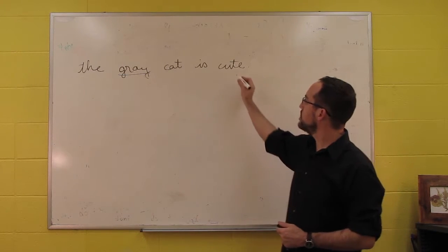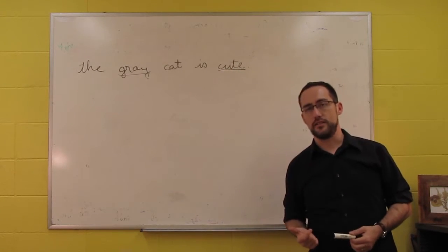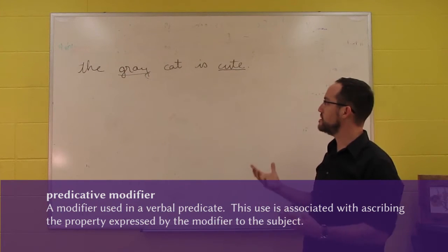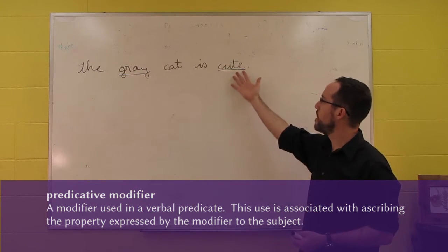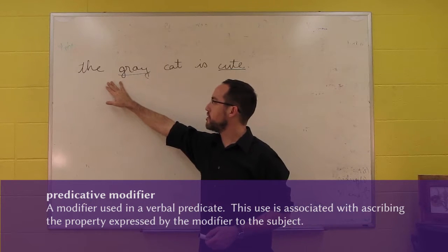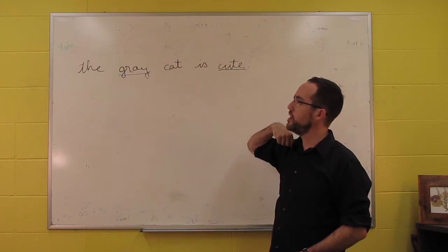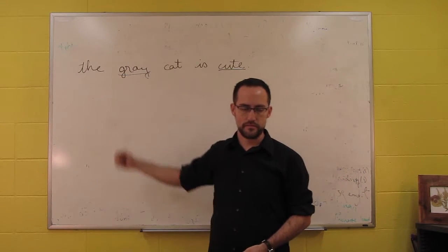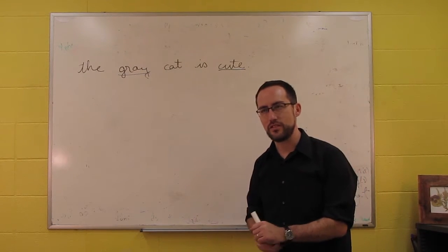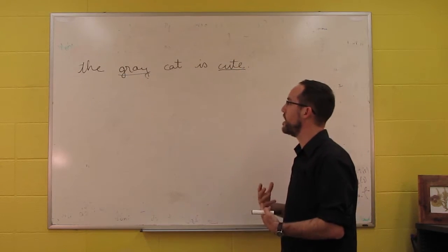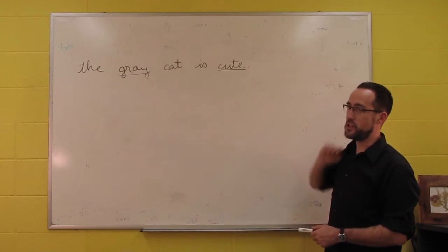Whereas the use of an adjective like cute inside the verb phrase is what's called predicative. A predicative use is simply the use of a modifier as an assertion. So when we say the gray cat is cute, we're asserting that it has this property, whereas we're taking for granted that it has the gray property. When we say we're taking it for granted, it's not quite a presupposition — it's just that we're not making an assertion about the grayness of the cat. We are making one about the cuteness, though.